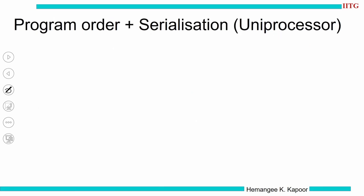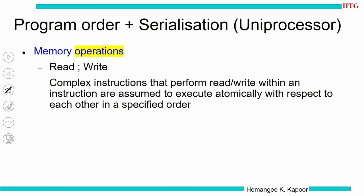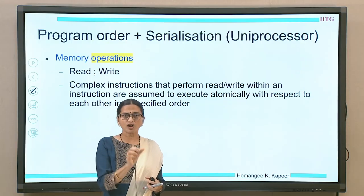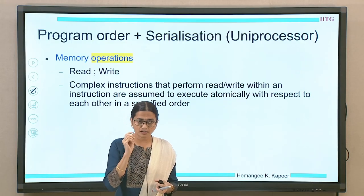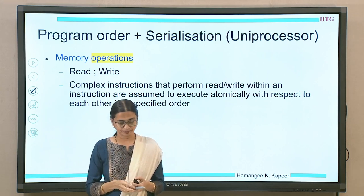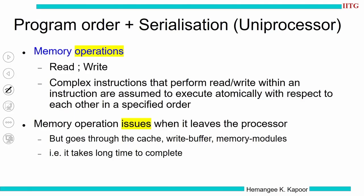We need to look at formalisms of program order and serialization in sequential and parallel cases. In a uniprocessor, memory operations occur when we do a read or a write, and these are atomic. When we go for a read, the read completes; when we go for a write, the write completes. In certain processors there are complex instructions with an internal read followed by a write — a read-modify-write type instruction — and we assume these also happen atomically, meaning multiple sub-operations are done together.